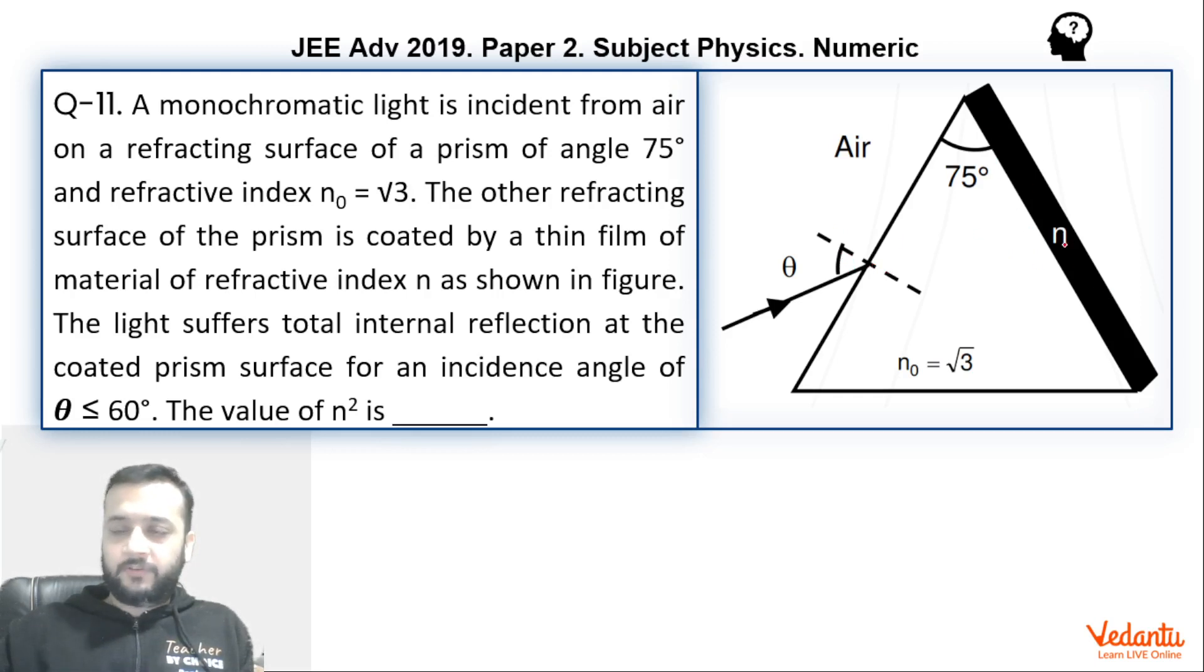There is a slight coating of refractive index N on this surface because of which it does not suffer TIR, but it is said that if theta is less than or equals to 60 degrees then it will suffer TIR. So using this data we have to find the value of N.